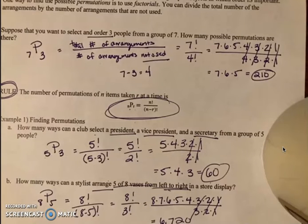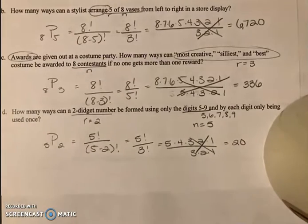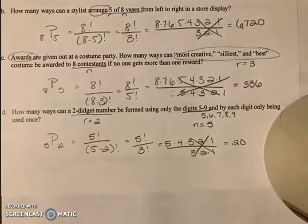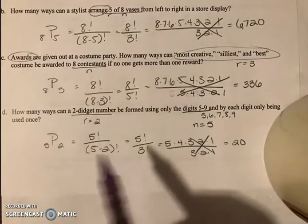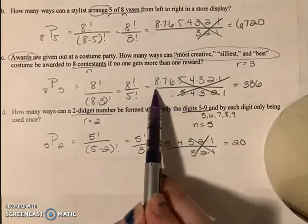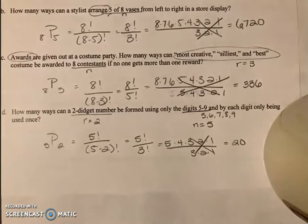I'd like for you to pause the video and attempt C and D. Part C. We knew it was a permutation because there are awards and those are different awards—most creative, silliest, and best. So that's three awards for eight contestants. It would be eight factorial over five factorial, which becomes 8 times 7 times 6, or 336.